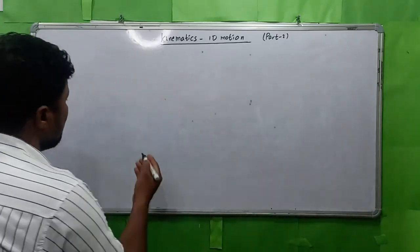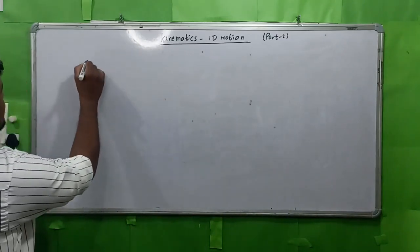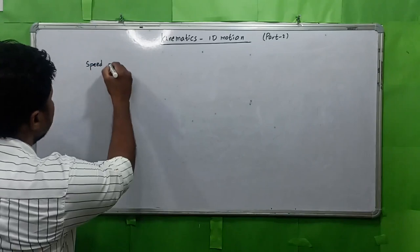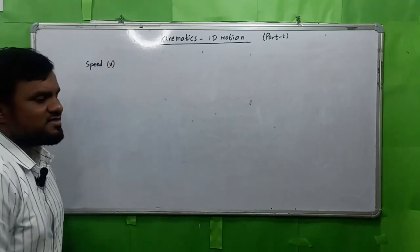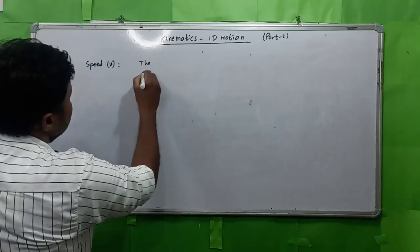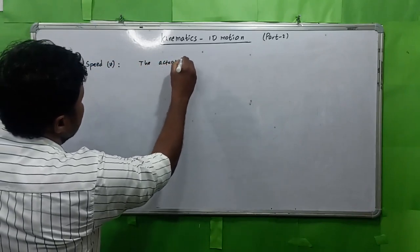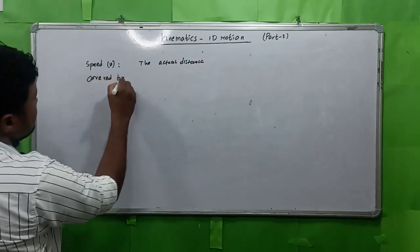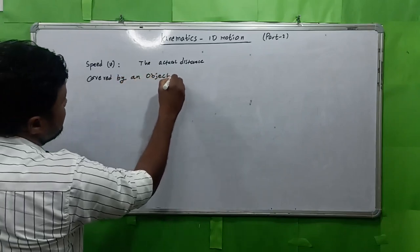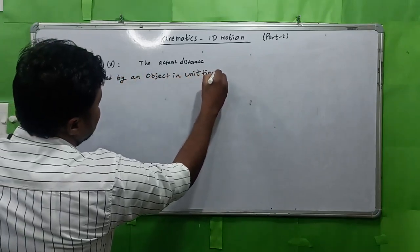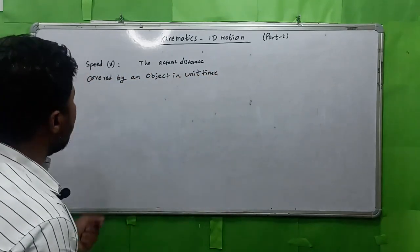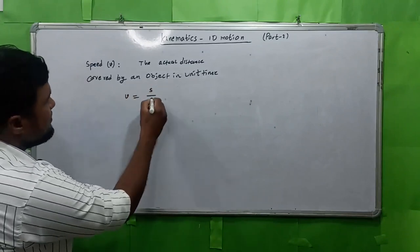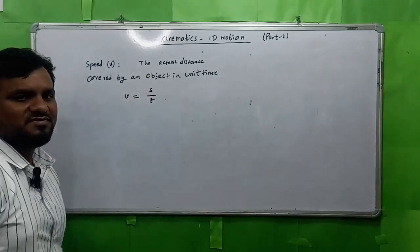Now I will start with speed, the kinematic term speed. Speed is denoted by letter V. It can be defined as the actual distance covered by an object in unit time. So V is equal to S by T.